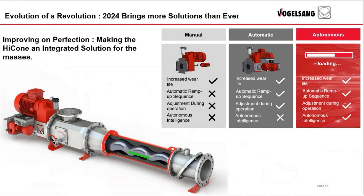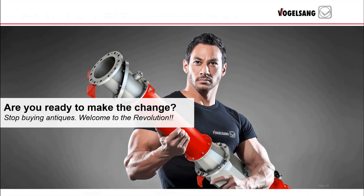Evolution of a revolution. HyCone advancements will continue through 2024 in the form of the automatic and autonomous versions. Customers will experience a level of cost savings through reduction of electricity usage, smaller horsepower motors, and VFDs. There will also be the possibility of controlling every aspect of the pump operation as well as predictive adjustments and increased efficiency — shown here: manual, automatic, and autonomous. The HyCone by Vogelsang — the first pump you should choose and the last pump that you will ever need. To be continued.